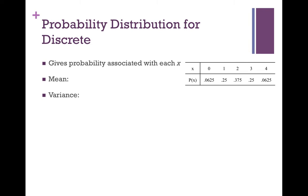First, we're going to look at discrete probability distributions. These distributions are displayed in three different ways: by a table, a formula, or a graph. Most of the time you're going to see a table or a graph. A graph would look like a histogram or a bar chart — it has bars for each of the possibilities and their corresponding probabilities.